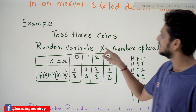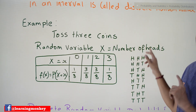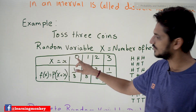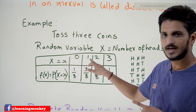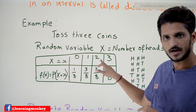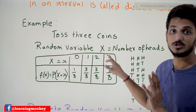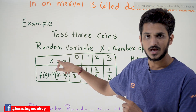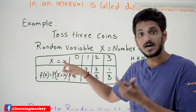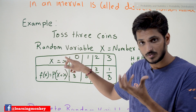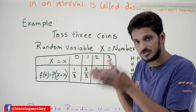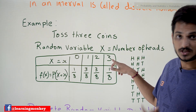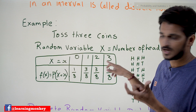Let's say our random variable X equals the number of heads. The possible values of X are: zero heads, one head, two heads, three heads. These are all the possible values for the random variable X. This random variable X is in the range zero to three — that is what we call the interval of that random variable.